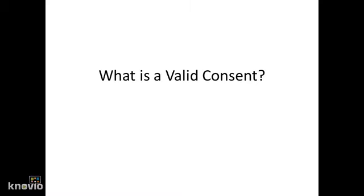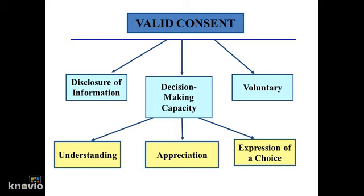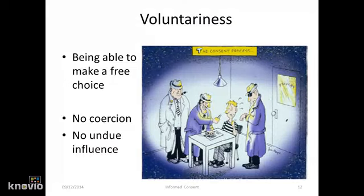So what constitutes a valid consent? This slide shows the elements of a valid consent. There needs to be adequate disclosure of information. Participants need to have the capacity to make decisions, which involves understanding factual information about the disclosure, appreciating how the information applies to their situation and their illnesses, and being able to express a choice. Finally, their decision needs to be voluntary, meaning the participant should not feel pressured to sign the informed consent form. One should be able to make a free choice, and this involves no coercion and no undue influence.